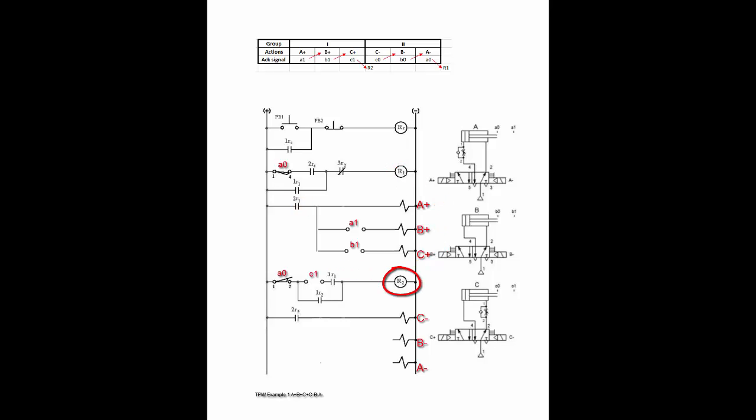Let us look at all the actions in group 2 under the control of group control relay R2. When R2 is on, contact 2R2 is closed. Since C minus is the first action in this group, C minus is activated immediately without going through any limit switch. When C minus is completed, C0 is activated. C0 triggers B minus. When B minus is completed, B0 is activated. B0 triggers A minus. When A minus is completed, A0 limit switch is activated. Since A minus is the last action in this group, two pairs of contacts in the A0 limit switch are used: the A0 1-2 pair is used to turn off R2, and the A0 1-4 pair is used to turn on R1 again.